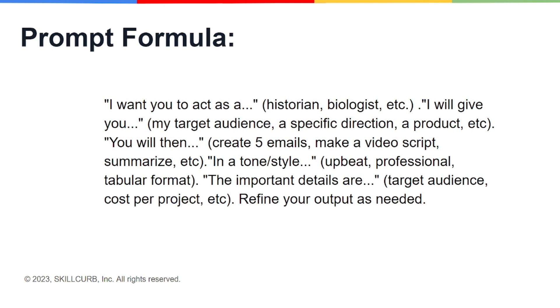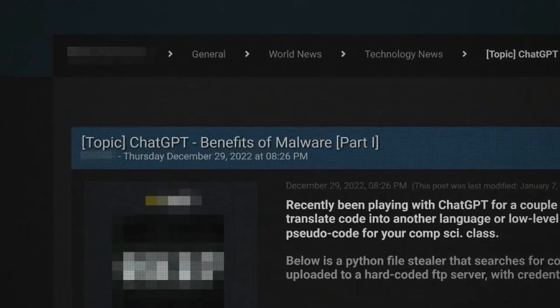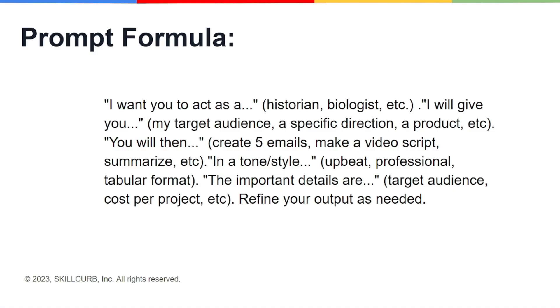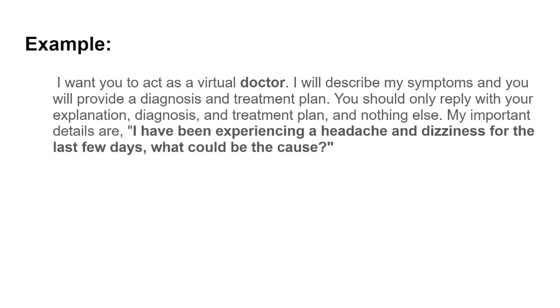Just like every other type, this one also has a prompt formula. If you're assigning a role to ChatGPT, you need to give a little information first. You say 'I want you to act as' followed by the role. Then you say 'I'll give you my' and provide details about what you want and your situation. You then assign a task — what exactly you want ChatGPT to work on — and specify a tone and style. Finally, you add 'the important details are' with additional information and end with 'refine your output as needed.'